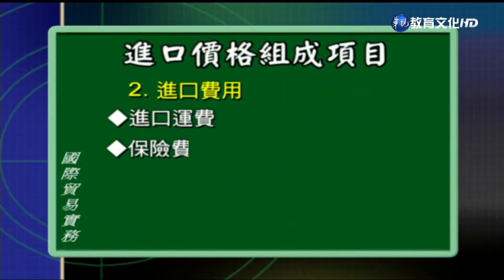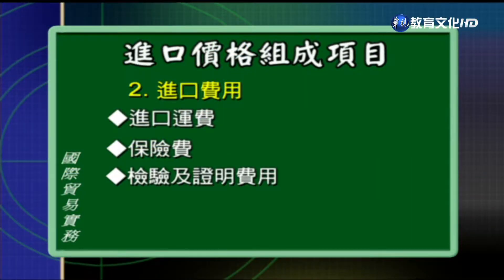例如交易条件如果是CFR或者是CIF，运费都已经包含在出口商所报的价格里头，进口商不需要再额外支付运费。第二个项目是保险费，它是指从出口地到目的地之间的国际运输保险费用。倘若交易条件是CIF、CIP，就表示出口商所报的价格已经包含保险费，进口商不需要再额外买保险。但是如果交易条件是FOB的话，就表示进口商自己要购买国际运输的保险，在计算进口费用的时候就要把这笔项目给加进去了。